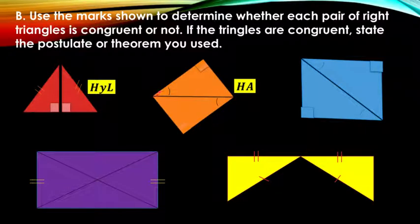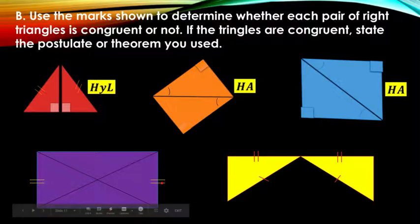So it's HA - hypotenuse, because this line is the longest line, and acute angle. And this one, we have an acute angle and the longest line or hypotenuse that's reflexive. It's still HA.